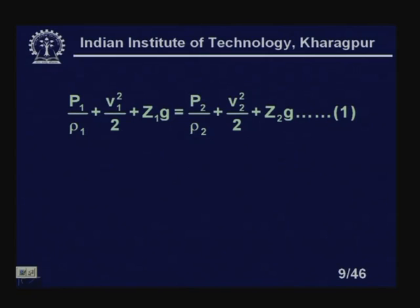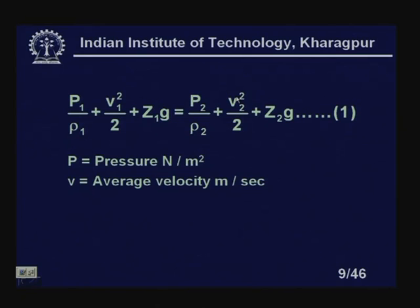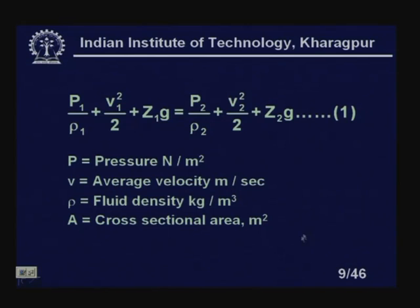Applying Bernoulli's equation across upstream and downstream sections, we write: P1/ρ + V1²/2 + Z1·g = P2/ρ + V2²/2 + Z2·g. Here P is pressure in N/m², V is average velocity in m/s, ρ is fluid density in kg/m³, A is cross-sectional area in m², and Z is elevation above datum level. All dimensions are energy per unit mass.